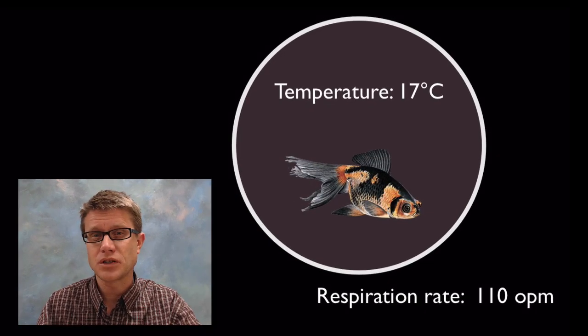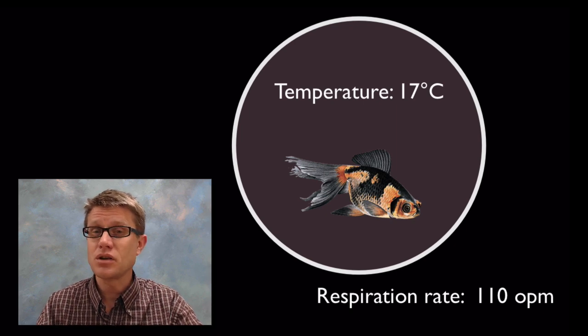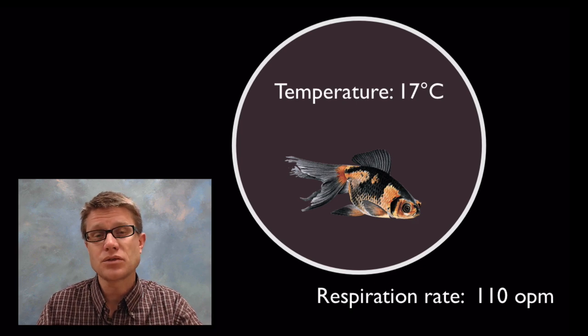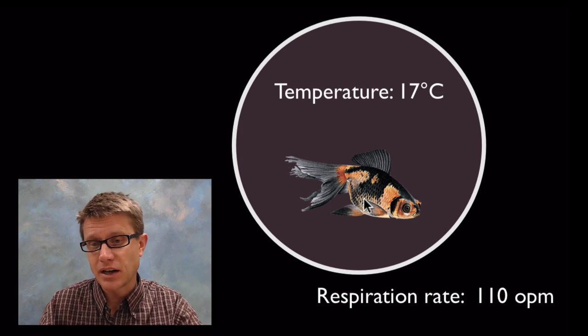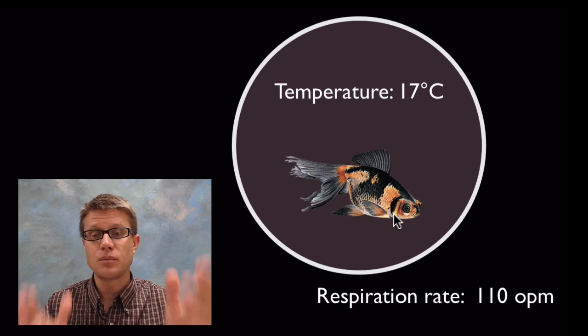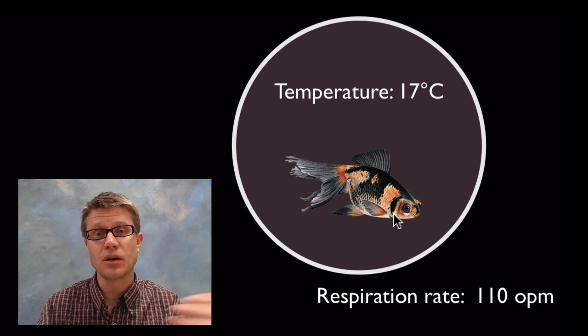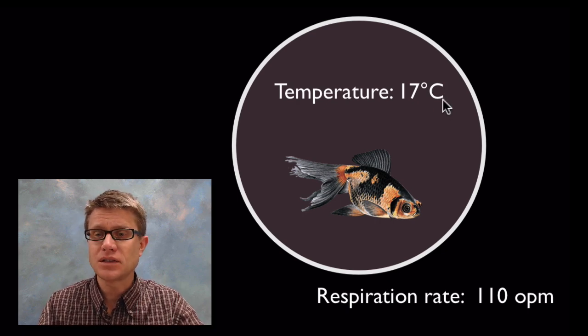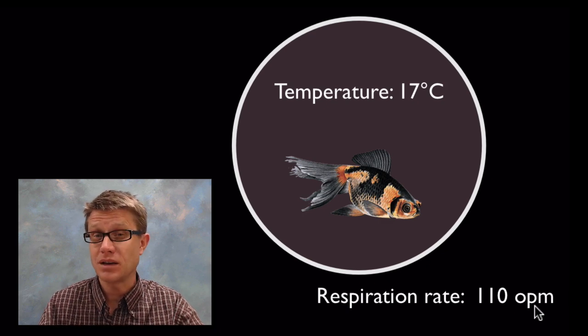Imagine we have a goldfish. It's in a bowl and it's 17 degrees Celsius. Now in order to use Q10 you'll have to use Celsius or Kelvin to come up with your values. But let's say we're measuring its respiration rate. How do we do that? Well the goldfish on the side are going to have these operculum. And as they breathe they're going to open up those operculum and we can count the number of breaths per minute and that's going to be their respiration rate. So let's say at 17 degrees Celsius the respiration rate is 110 operculum movements per minute.